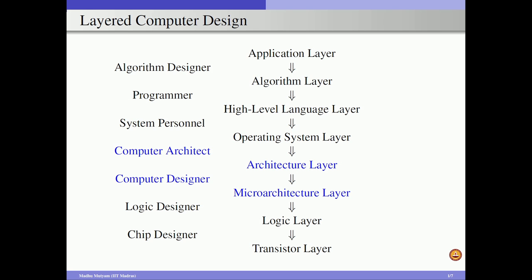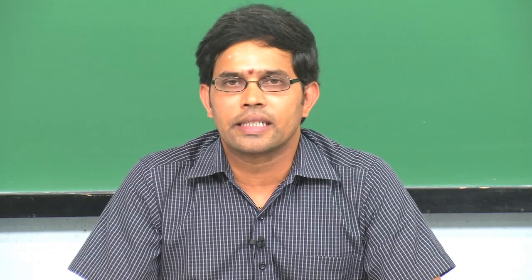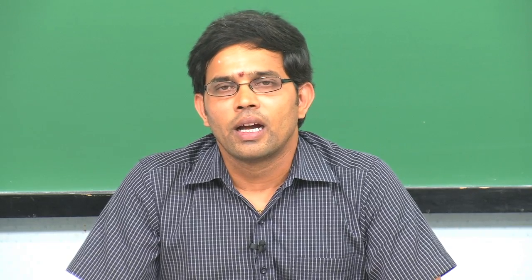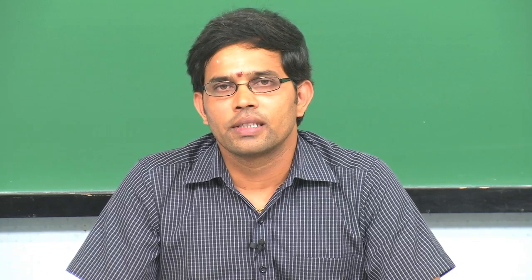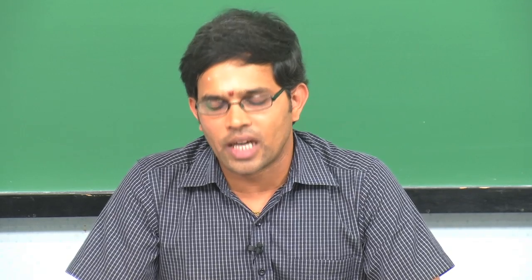After the application layer, the next layer is the algorithmic layer. Once the application is defined, we need to see what are the characteristics of the application — such as what type of data it takes, what type of operations we can perform, how the operations are sequenced, and whether there is any implicit parallelism among the operations. We define all these things and then come up with a step-by-step procedure to compute the outputs for the application.